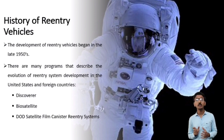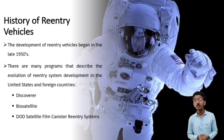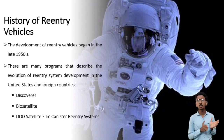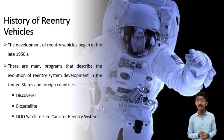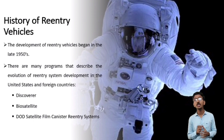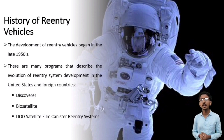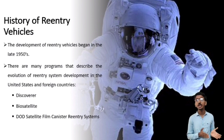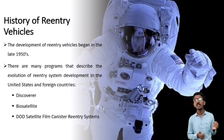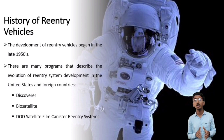Next is the Biosatellite program. This late 1960s NASA program directed by Ames Research Center and built by General Electric was intended to study the prolonged effects of weightlessness and radioactivity on living organisms. The agency planned six biosatellite flights: the first two with plants, the second two with monkeys, and the third pair with rodents. The program was suspended after the third flight. The biosatellite consisted of a conical reentry vehicle which contained the recovery capsule and a cylindrical adapter section. Next is the DOD Satellite Film Canister Reentry System. Beginning in the early 1960s, the Air Force and the CIA began using reentry capsules to retrieve film from satellites. The project was conducted under the code name Keyhole, and successive satellite generations were given KH numbers.